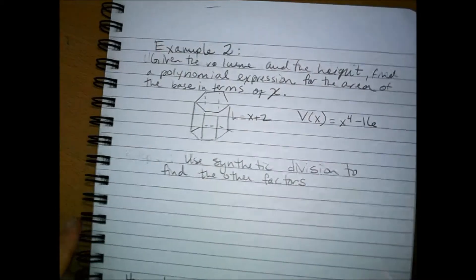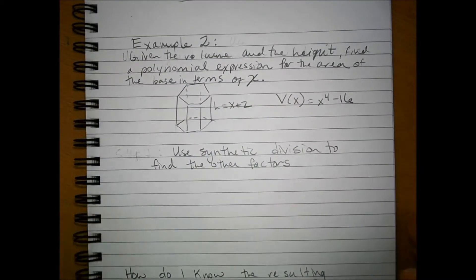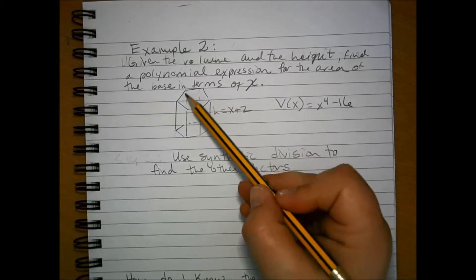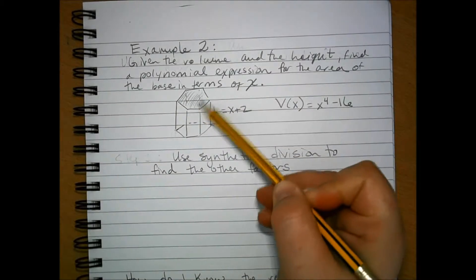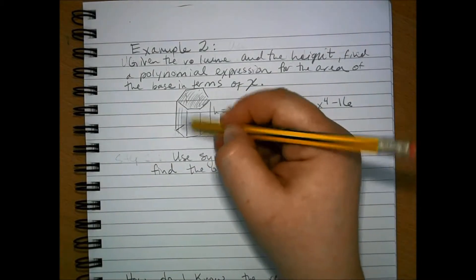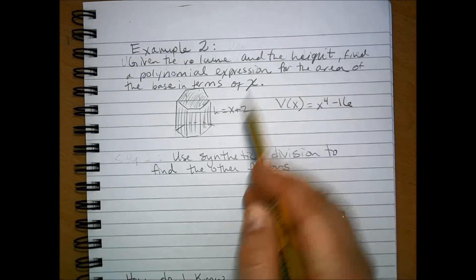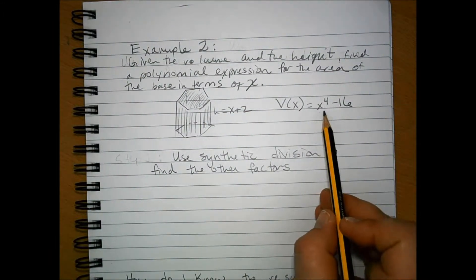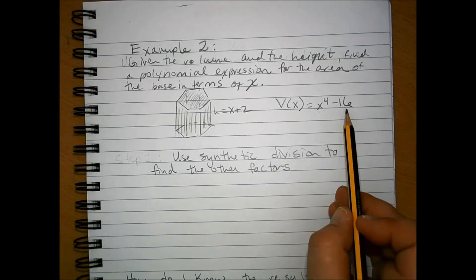Another example where we can use synthetic division to find factors is in this example. We have a hexagonal prism with a height of x plus 2 and a volume of x to the 4th minus 16.